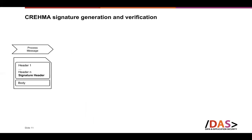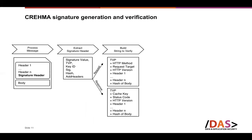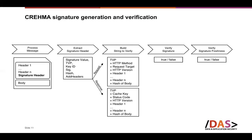On the recipient side, the signature header is extracted, the string-to-verify is built — the same as the string-to-sign — and the signature is verified. We also need to verify the signature freshness, which is a new concept introduced in CREMA. Freshness can be derived from caching information, for example from the max-age value. This signature freshness allows you to distinguish between a replay attack and a legitimately cached signed response.